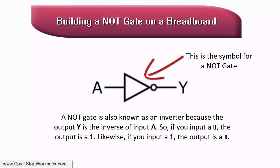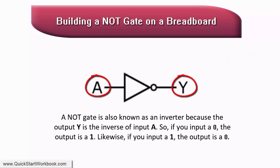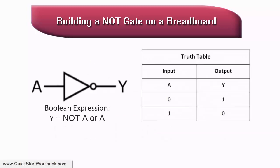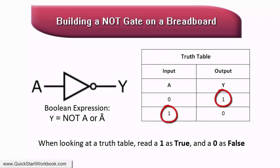A NOT gate is also known as an inverter because the output Y is the inverse of input A. So if you input a 0, the output is a 1. Likewise, if you input a 1, the output is a 0. When reading a truth table, a 1 is true and a 0 is false.